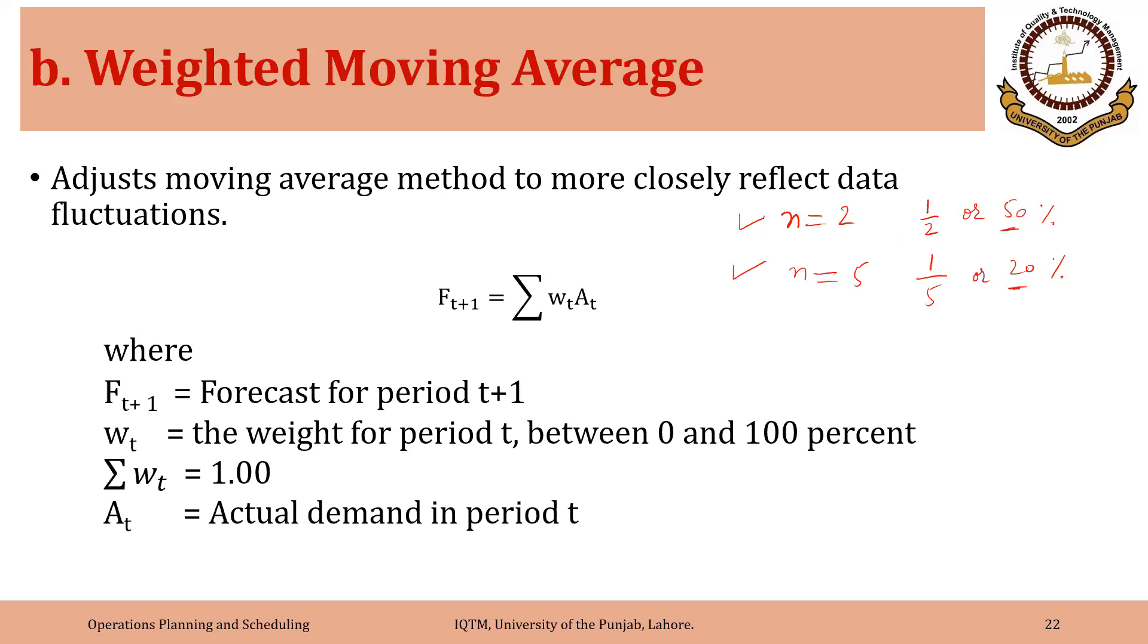In weighted moving average, we adjust moving average method to more closely reflect data fluctuations. So we assign a certain weightage to the actual demand for a certain period. So in this case, this is the future forecast and we find it by multiplying the weightage for a certain period with the actual demand for that period.